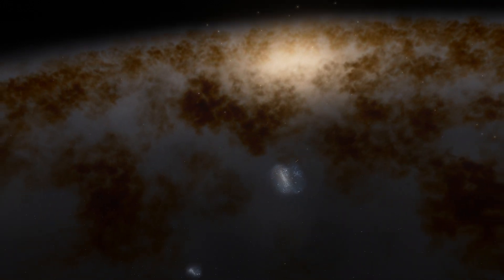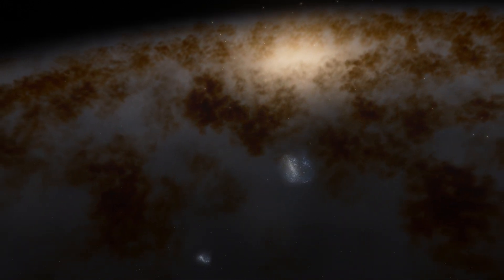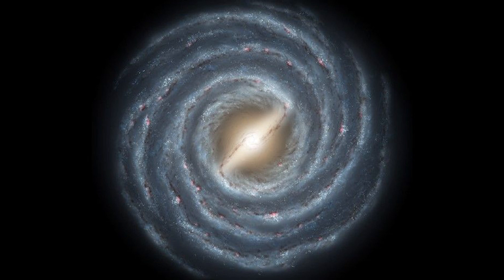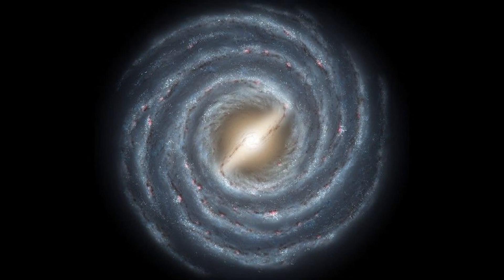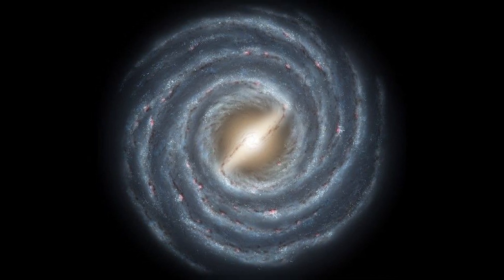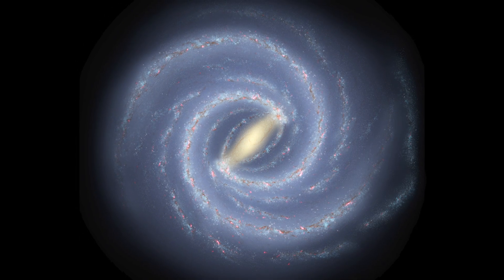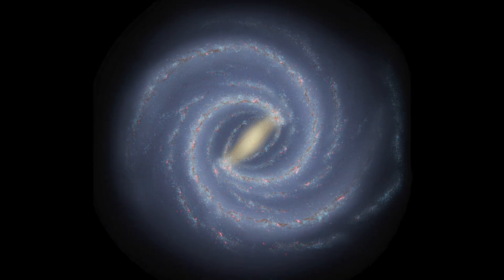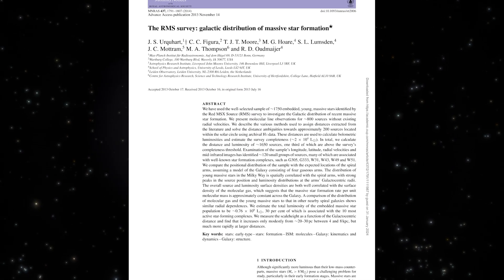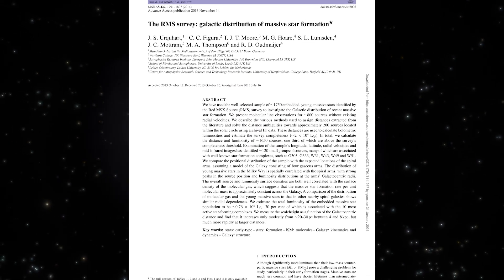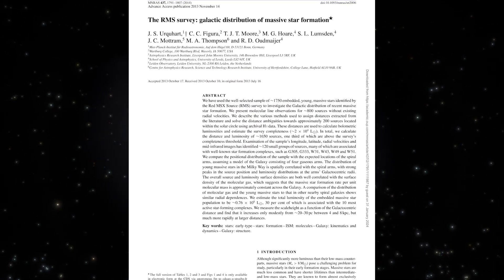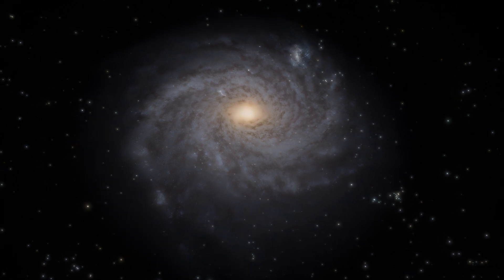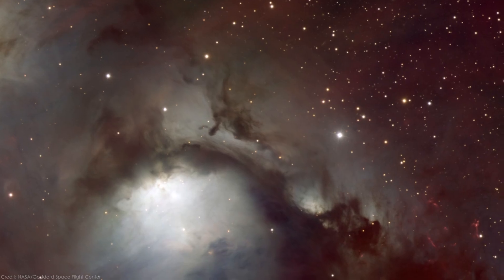Thus, Spitzer's data showed that the Milky Way is more likely not a galaxy with four arms — a relatively rare structure in the cosmos — but a typical galaxy with two large arms and several smaller offshoots. However, in 2013, another large-scale study called the Red MSX Source Survey once again restored the Milky Way's four arms.